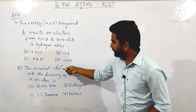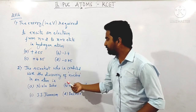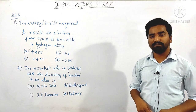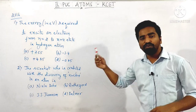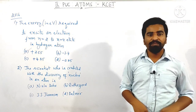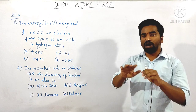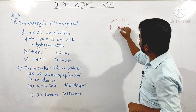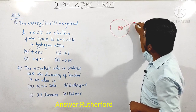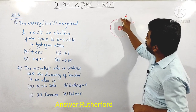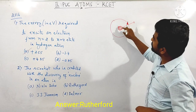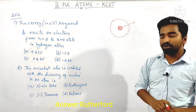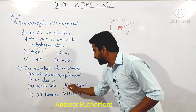Next question asked in 2016: the scientist credited with the discovery of the nucleus in an atom is? In the Geiger-Marston (Rutherford) alpha scattering experiment, Rutherford proposed that there is a central positively charged core in the atom, called the nucleus, where almost the whole mass of the atom is concentrated. Rutherford was the first to introduce the concept of the nucleus.